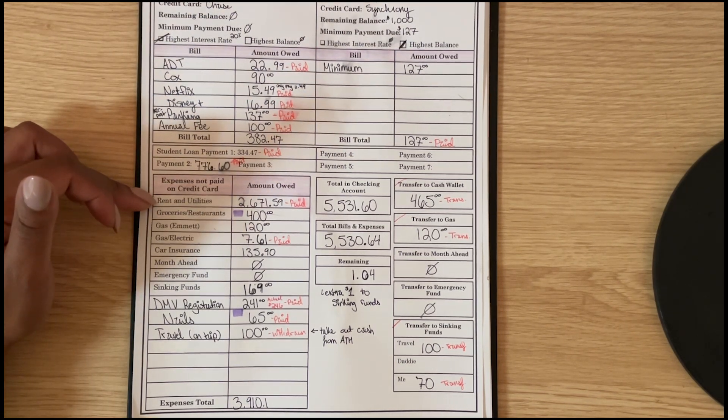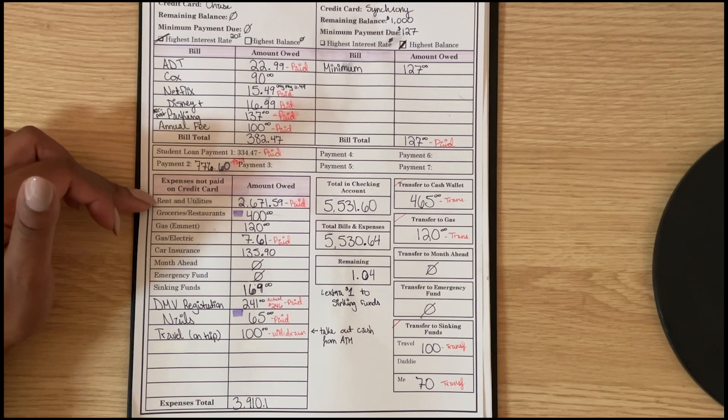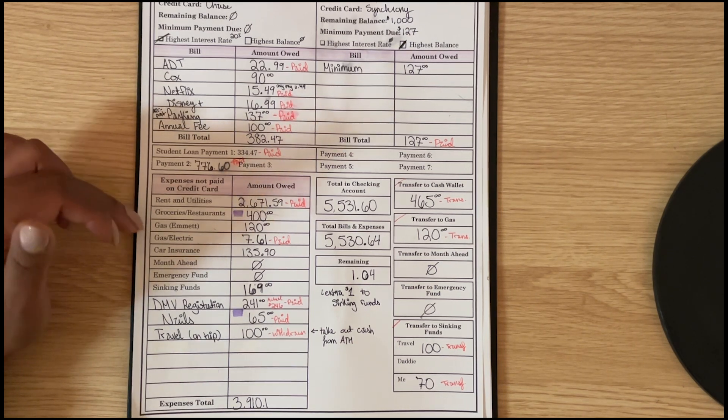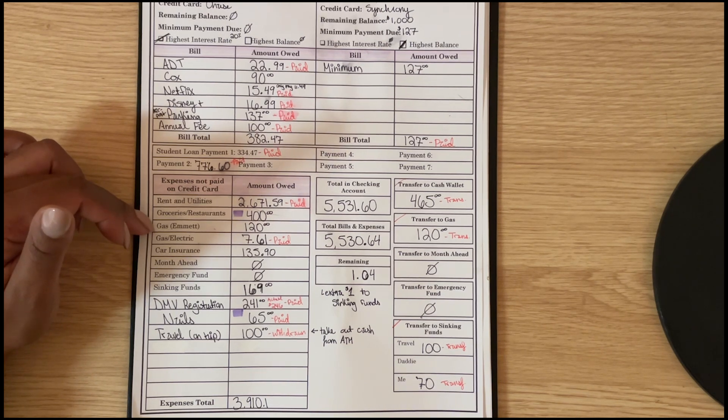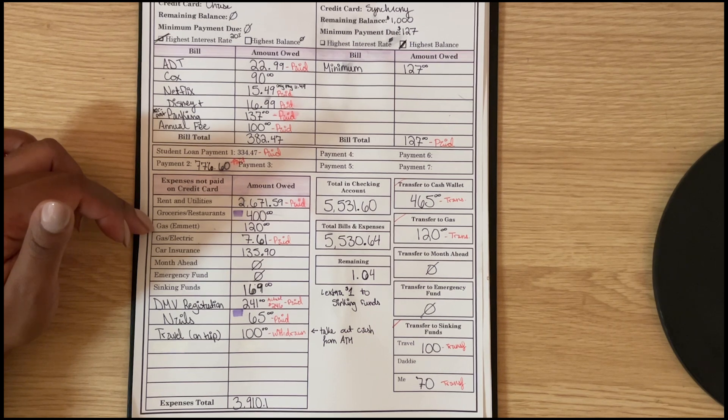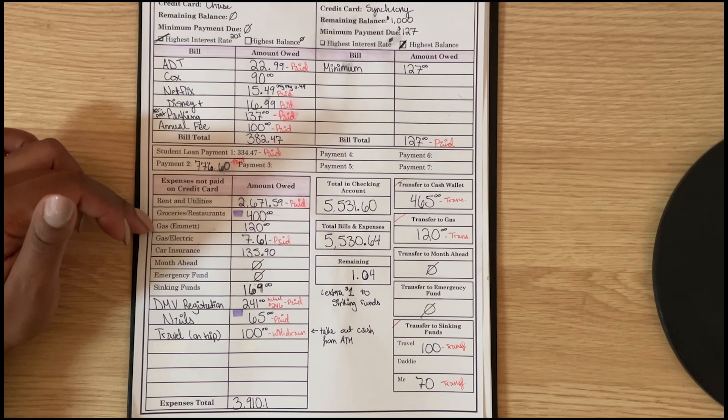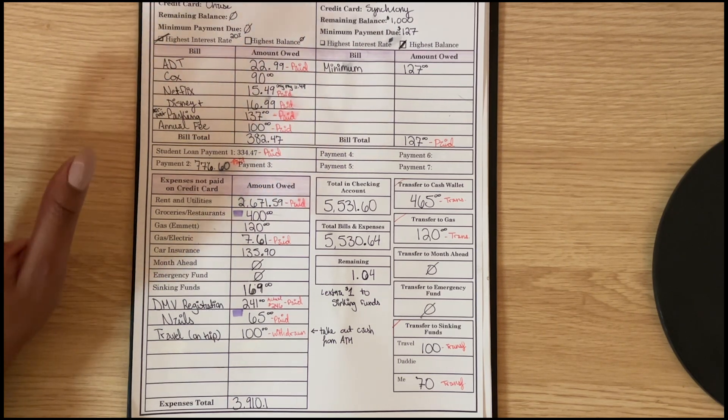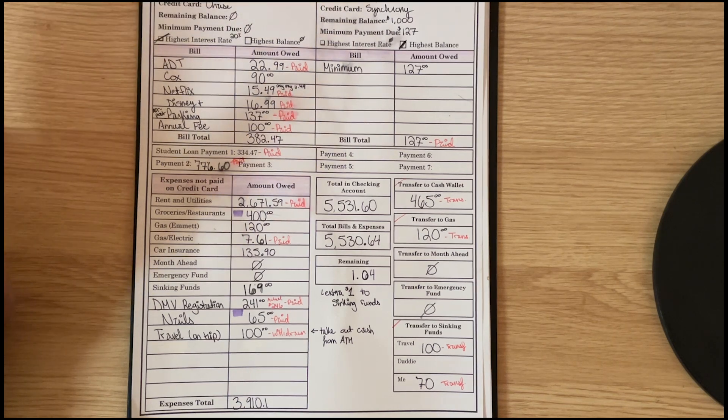Rent and utilities this month is $2,671.59. Groceries/restaurants is $400. Gas for Emmett I'm only going to do $120 this month because again I am flying home, so that means I'm not going to be driving as much. And it's November so it is also Thanksgiving break this month. That week I will not be driving as much, and then I have some other days off this month, so I just won't be driving as much.